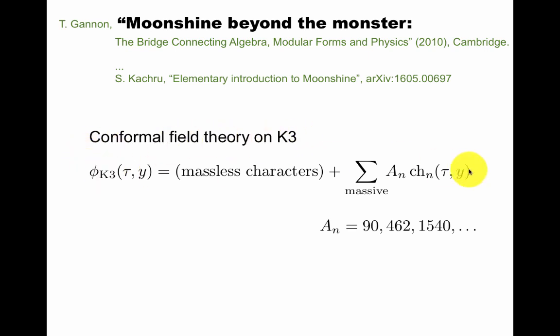The conformal field theory on the K3 surface, you can compute this quantity. The numbers you get here as coefficients, 90, 462, and so on, have significance as the dimensions of representations of a sporadic group, which is interesting to mathematicians.